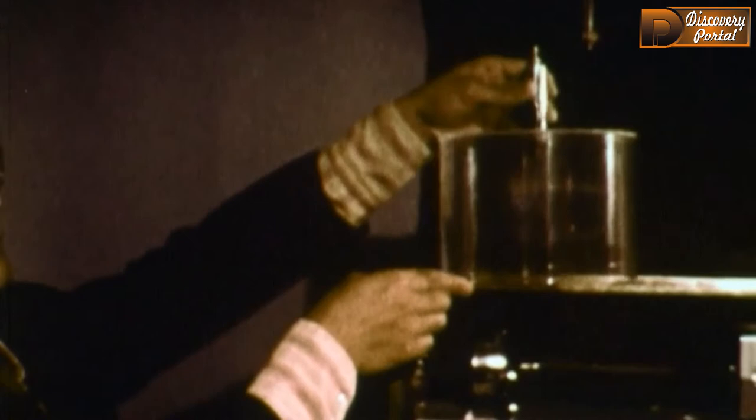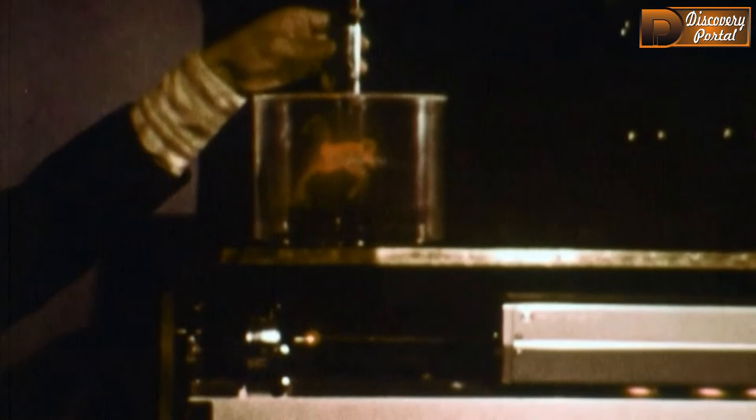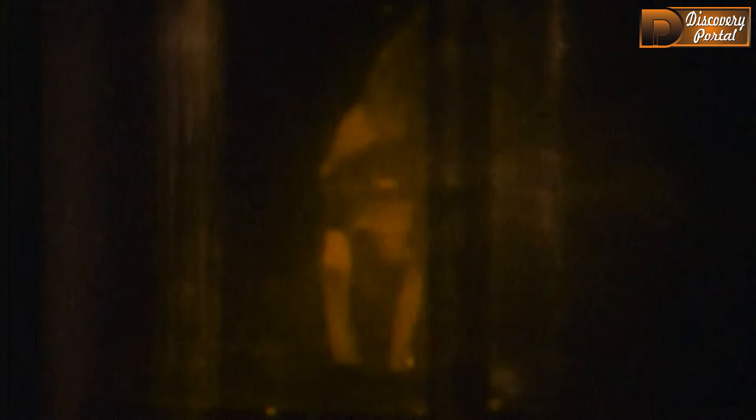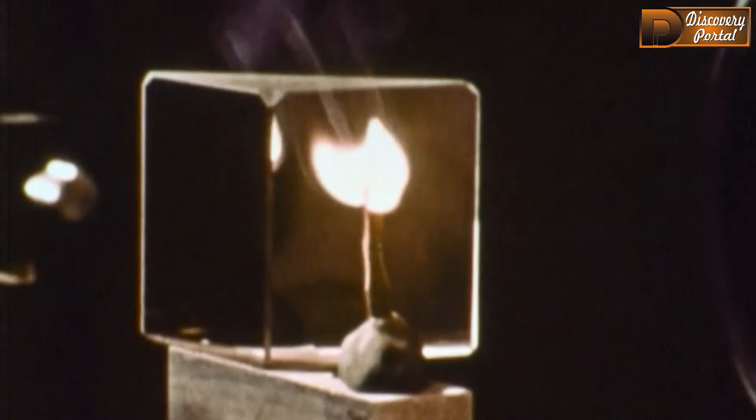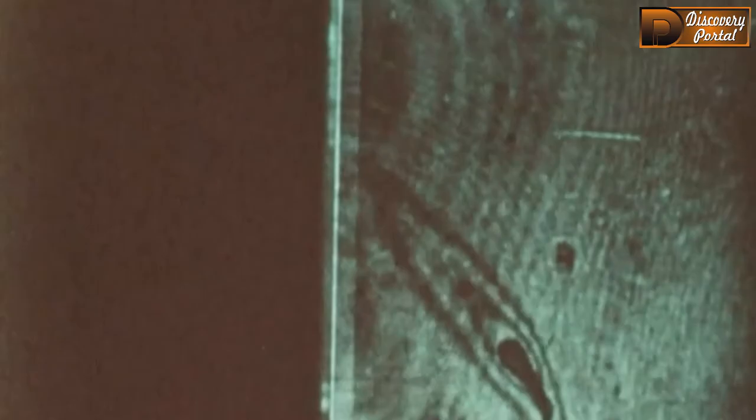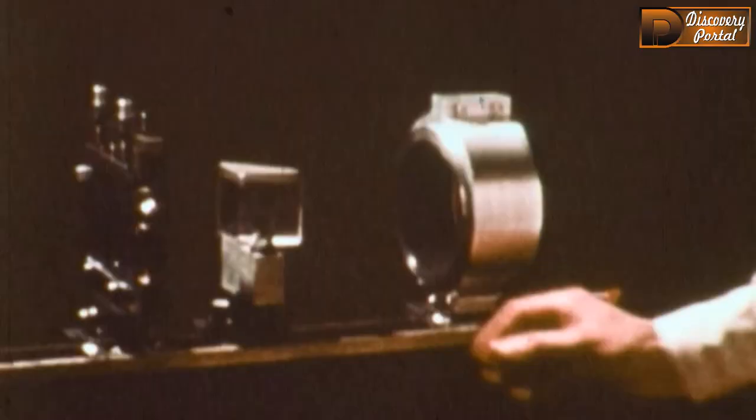This circular hologram was made by surrounding the object with a strip of film. There are an increasing number of practical laboratory applications of holography. Here, the effects of heat are made visible. Even very subtle heat effects are clearly visible.